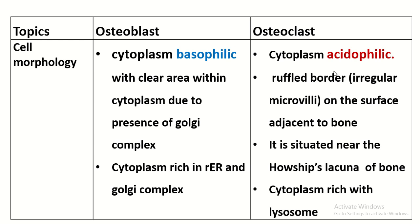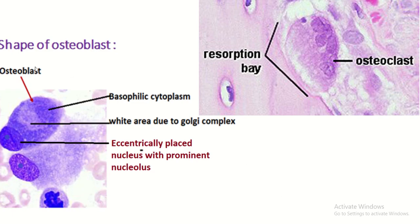One side of the osteoclast contains a ruffle border of irregular microvilli situated adjacent to the bone. The osteoclast is situated near the Howship's lacuna of the bone, where resorption of the bone starts. The cytoplasm is rich in lysosomes. You can see the osteoblast cytoplasm is basophilic with a clear area due to the Golgi complex.